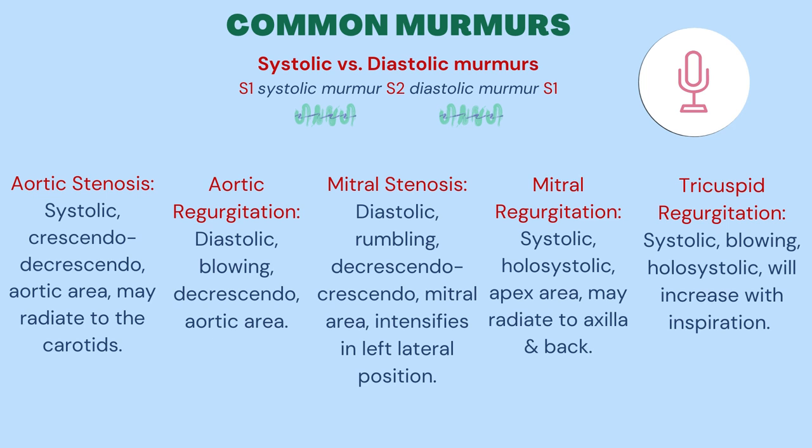You may hear this murmur radiate to the axilla or even radiate around the back. Tricuspid regurgitation is a systolic murmur, may be blowing in quality and holosystolic, and is best heard at the left sternal border. It also increases with inspiration.